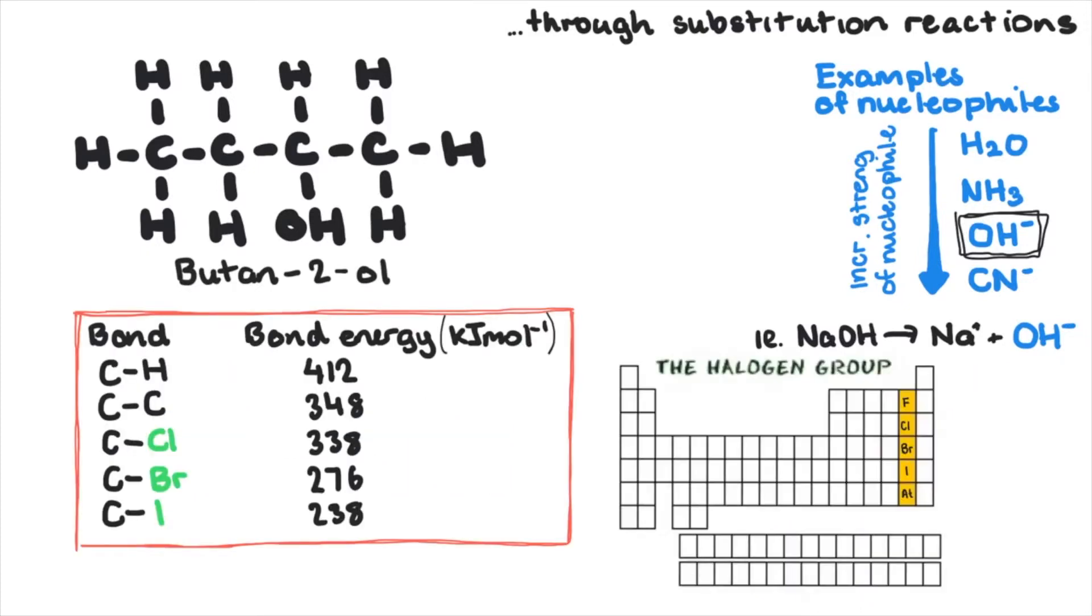As you move down the halogen group, the bond energy decreases. In fact, fluorine at the top, which has such a high bond energy with carbon, is unlikely to react.